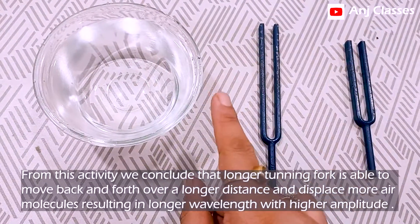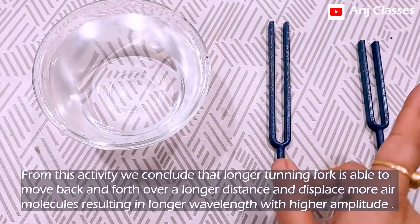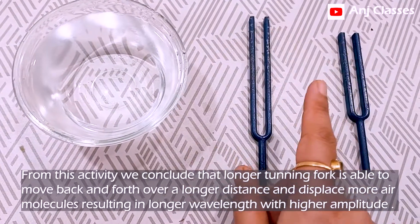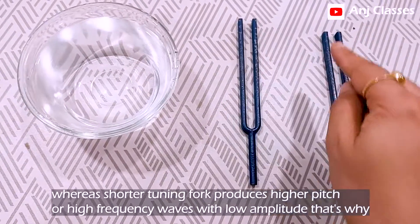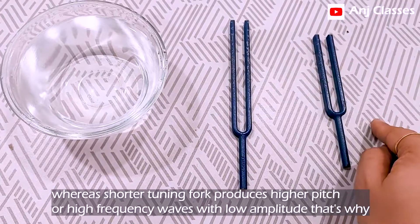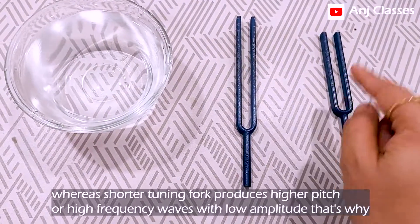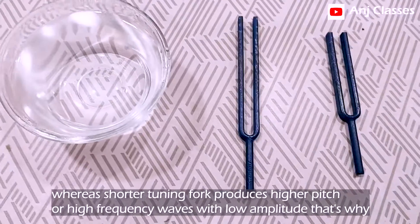It displaces more air molecules, resulting in longer wavelength with higher amplitude. Whereas the shorter tuning fork produces higher pitch - higher frequency waves with low amplitude.